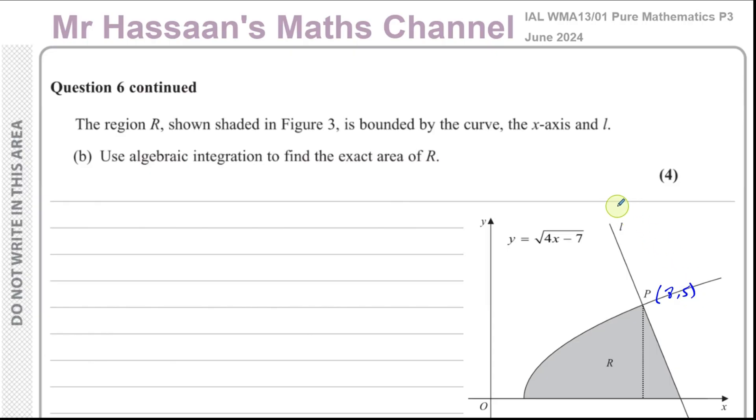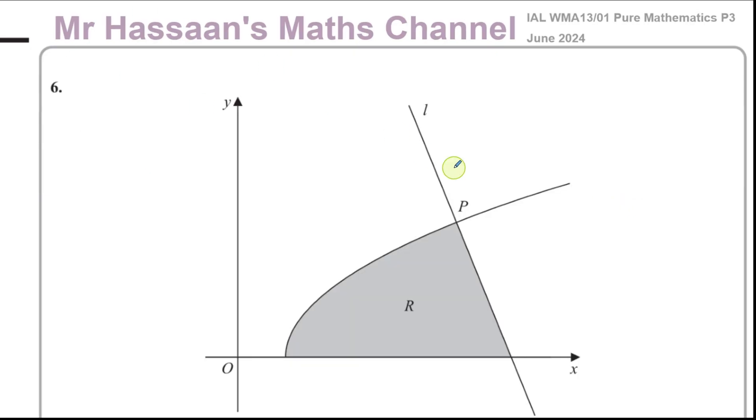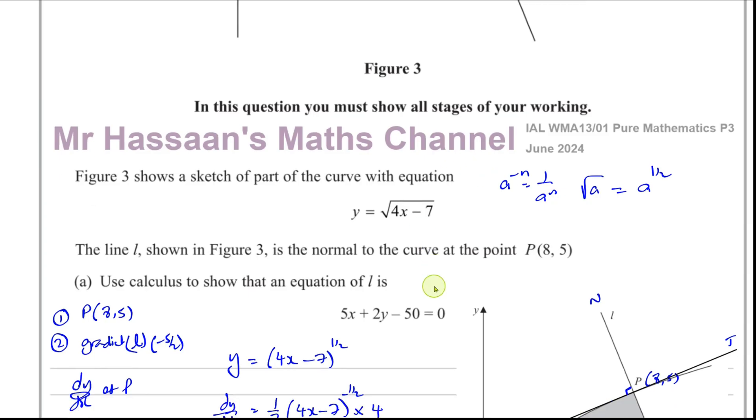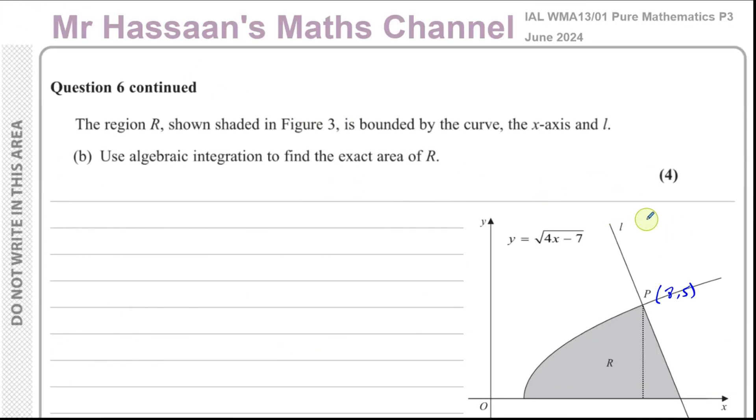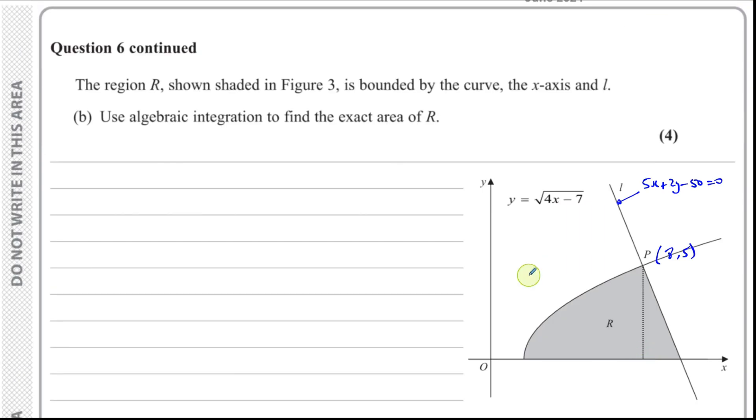And we know the equation of the line is 5x plus 2y minus 50 equals 0. That's the equation of the line and the equation of the curve we have. So we can split this up into two areas: area A and area B.